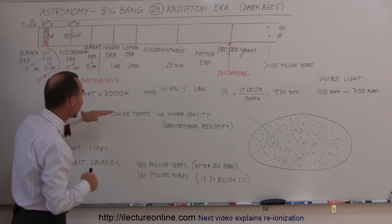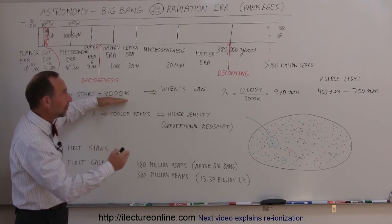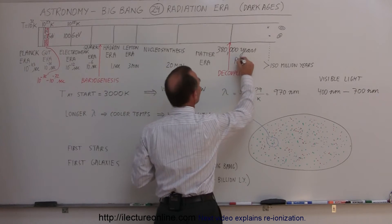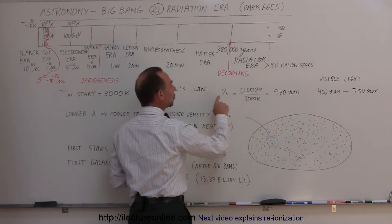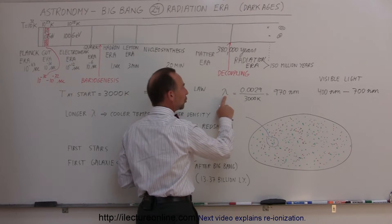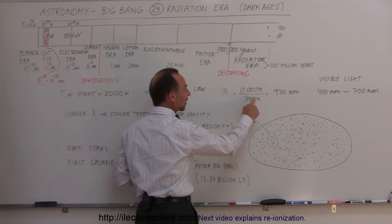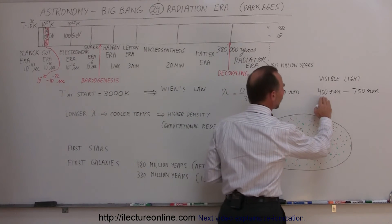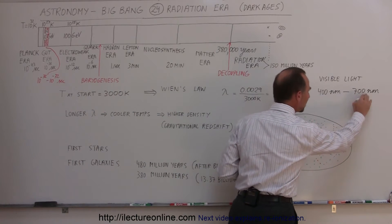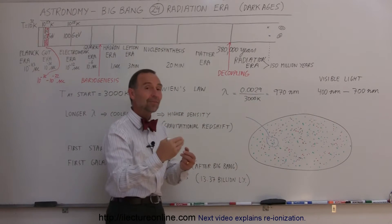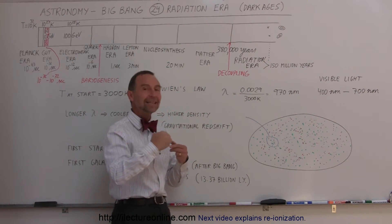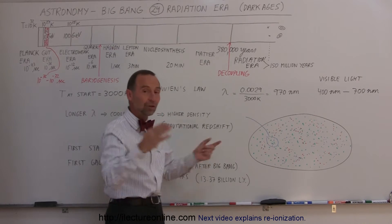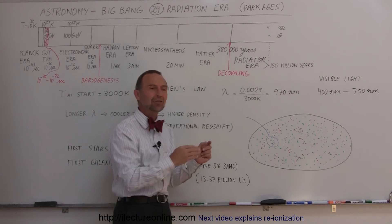Using Wien's law, we can determine the wavelength of radiation at the start of the Radiation Era by taking the constant divided by 3000 Kelvin, which gives us 970 nanometers. Remember that visible light falls in the range of 400 to 700 nanometers, so 970 nanometers is in the infrared range. The radiation filling the universe was now infrared radiation, no visible light.